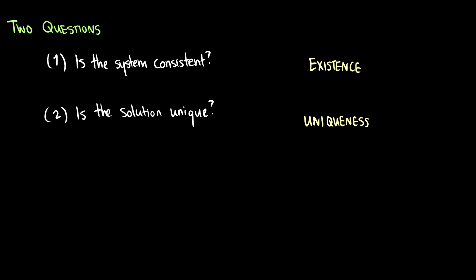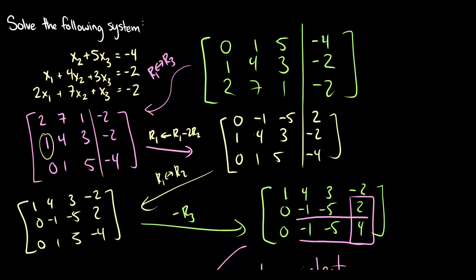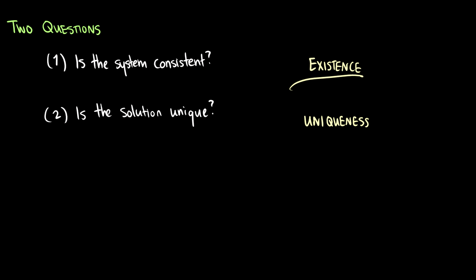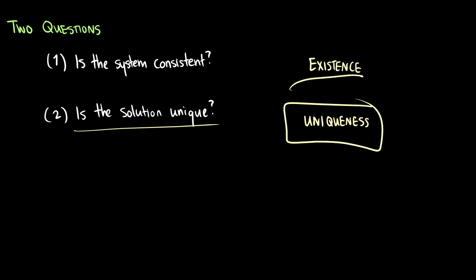When solving these systems, there are two questions to keep in mind. First: is the system consistent — does it have a solution? That's existence. In the previous example we said no, it's inconsistent. Second: is the solution unique — is there one solution or infinitely many? We'll look at that in the practice questions next video, where we'll get row reductions and row operations under our belt. Leave any questions in the comments below.